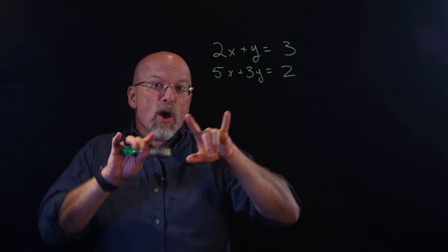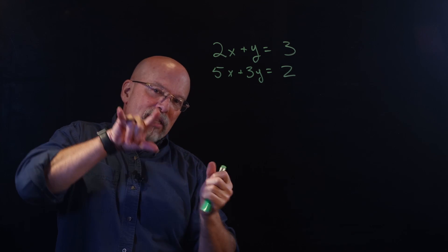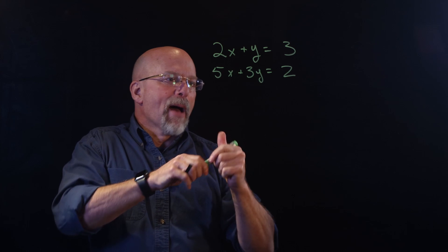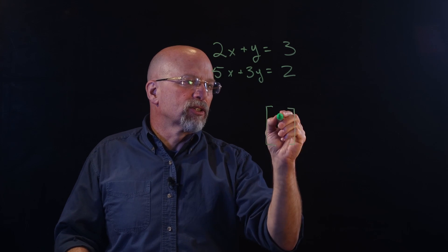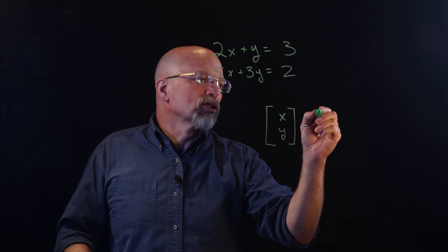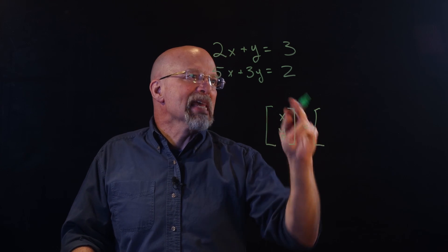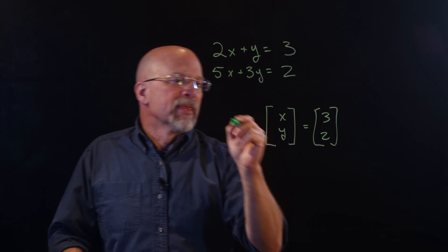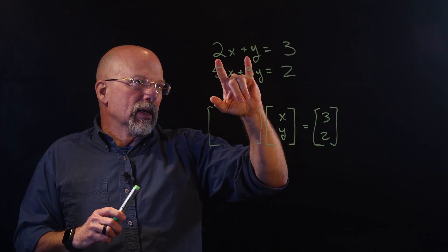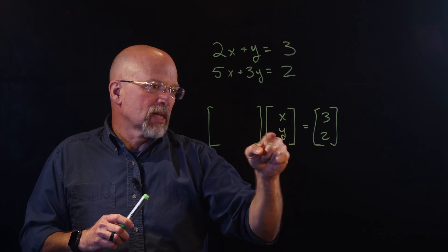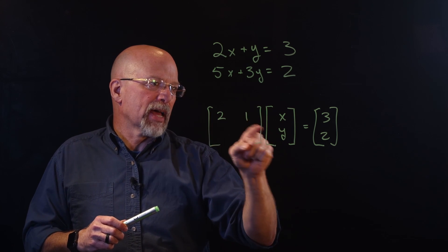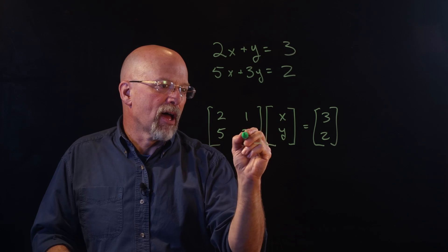If you remember matrix multiplication, whenever I multiply two matrices, I multiply the row of matrix A by the column of matrix B. So if matrix B is a vector with x and y, then after multiplying it by some matrix, it equals the vector [3, 2]. That matrix has 2, 1 in the first row and 5, 3 in the second row.